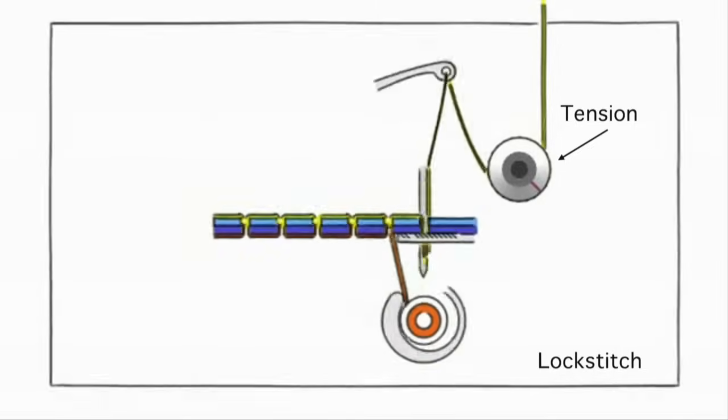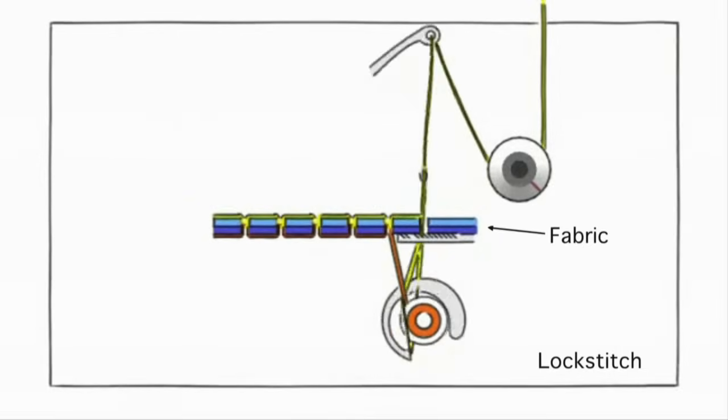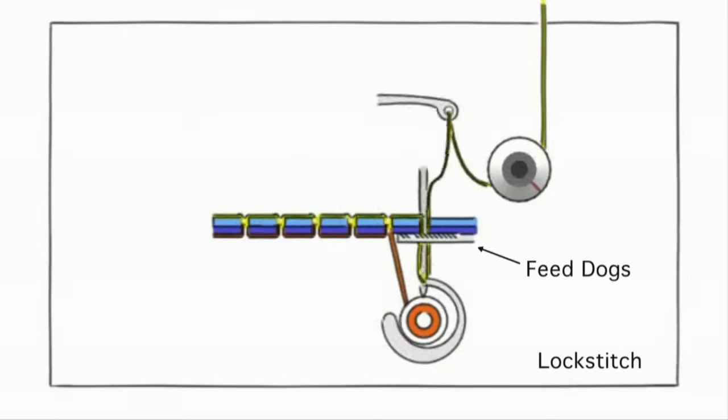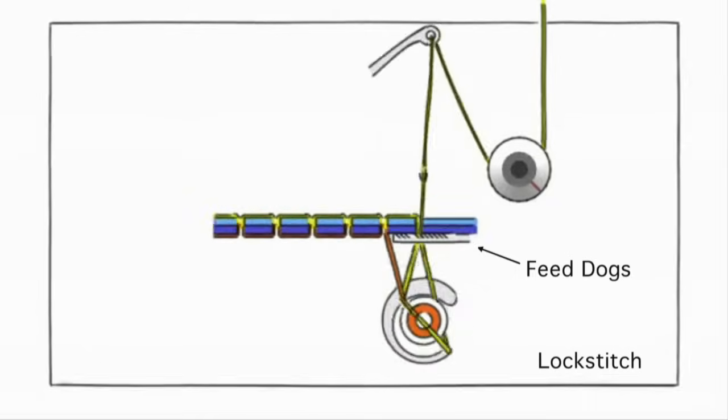This is the tension. This is the bobbin. These are fabrics going through and these are the feed dogs that are moving the fabric through.